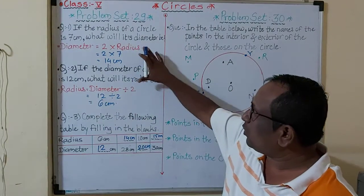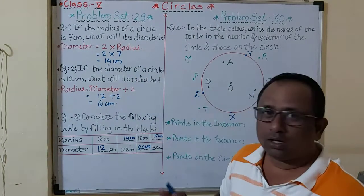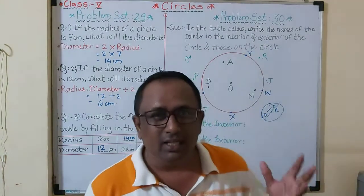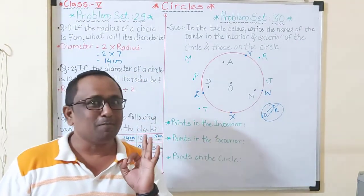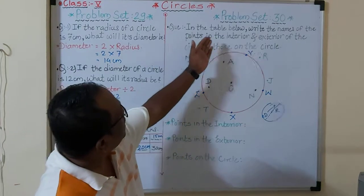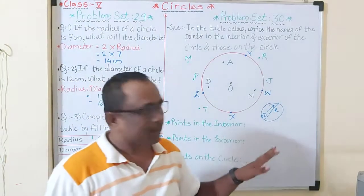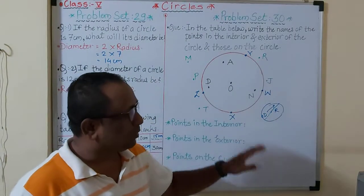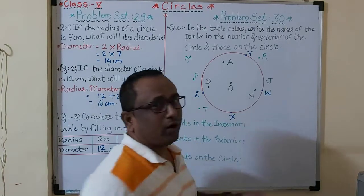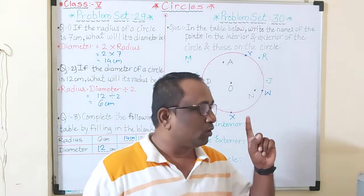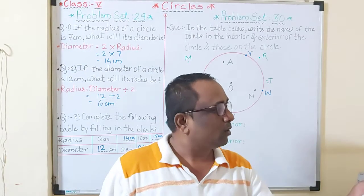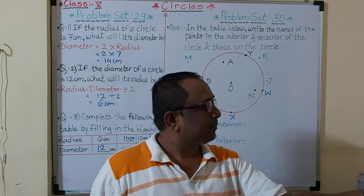Problem set number 30 is a little different but very simple. We have to find what is given and what we have to find in the table. I didn't draw the table here because I need to explain — but when you solve the examples, you have to draw the table as given in problem set number 30 in the textbook.